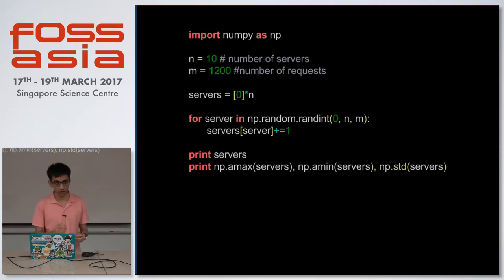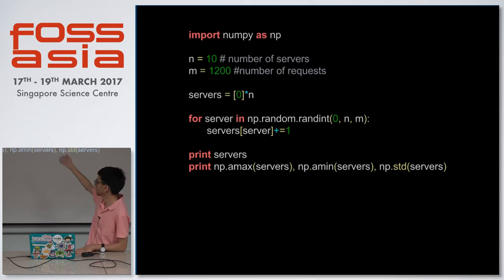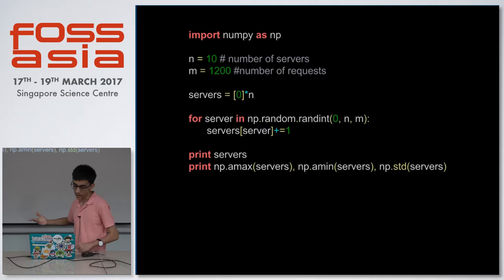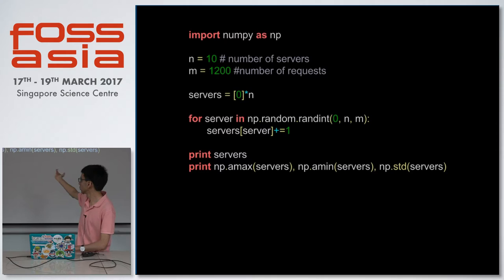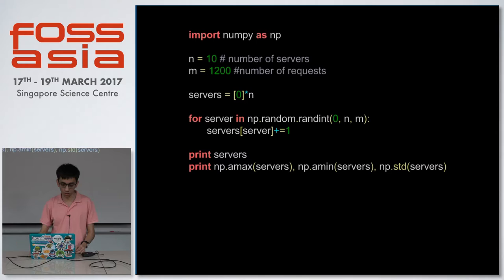Let's consider we just have n bins and m balls. Here n is the number of servers and m is the number of requests — I've set them to some values. I have n servers, and I'm randomly picking up indices and incrementing them by one, which basically models a request hitting one of the servers. Then I'm printing the server list and what the maximum load a server has, the minimum, and the standard deviation.